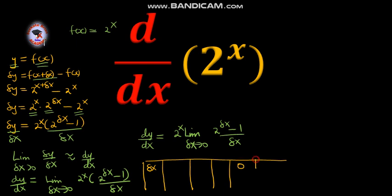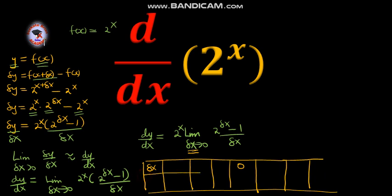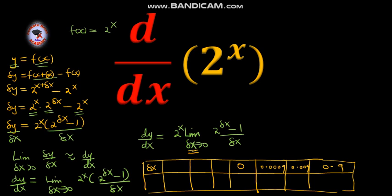We are saying that δx tends to 0 from either the positive side or the negative side. Let us start from the positive side — we start from 0.9, move to 0.009, then to 0.0009. From the left, we have negative 0.0009, negative 0.009, and negative 0.9. We shall write this expression in the calculator.